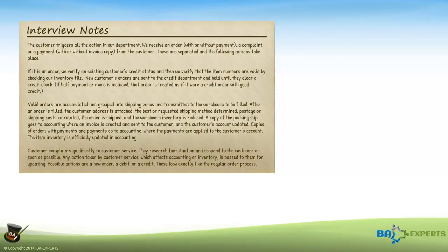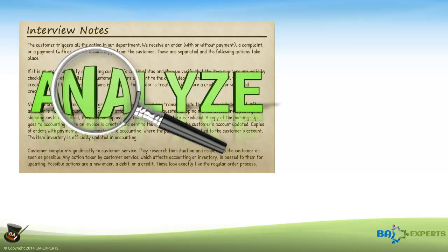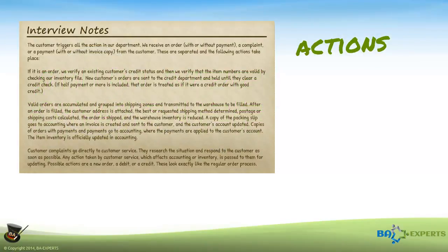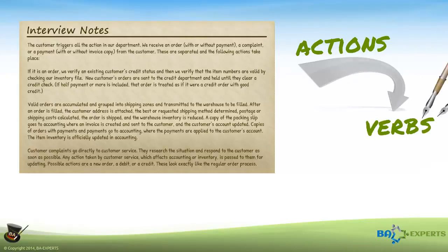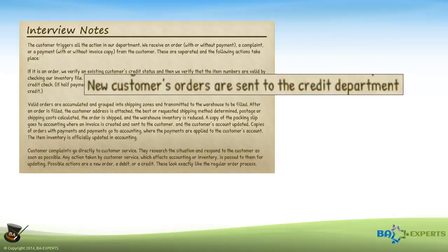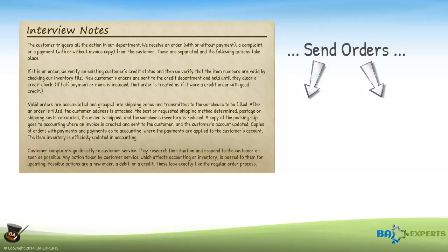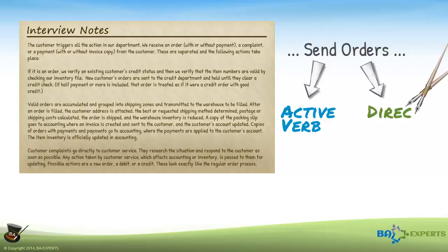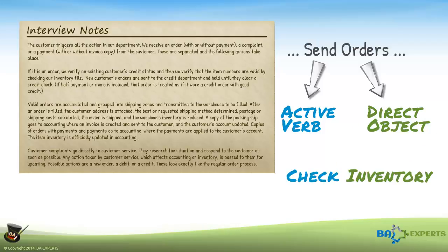Given that all I have at this time are interview notes from the project sponsor, I start by analyzing them to find these lower level details. Specifically, I'm looking for actions that represent lower level processes performed within Enter Orders. We express actions as verbs using active voice — e.g., 'Enter Orders' is active, whereas 'Orders are entered' is passive. When I find a verb in the passive voice, I convert it to active voice to evaluate if it is a legitimate process. I try to give each prospective process a proper active verb direct object name as recommended for naming processes on a DFD — e.g., Check Inventory, Sort Mail.